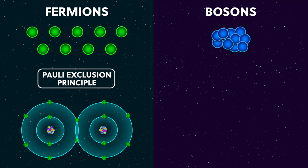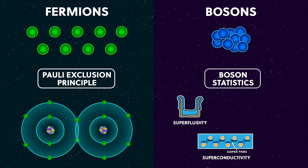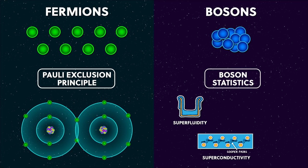Bosons are different — they're allowed to share the same quantum state. And this results in some really interesting quantum phenomena like superfluidity, superconductivity, lasers, and many more. And at a more fundamental level, all of the forces we know of come from a host of virtual bosons interacting with real particles.